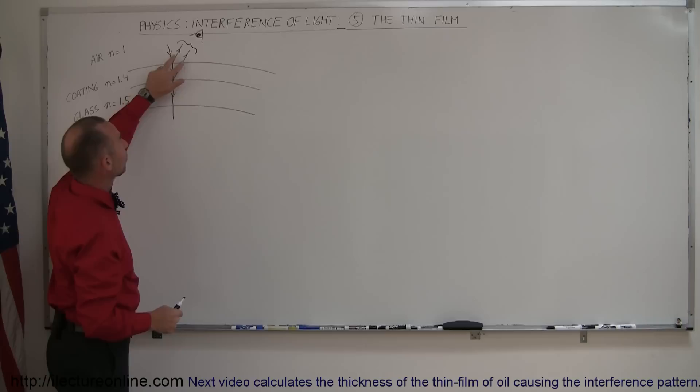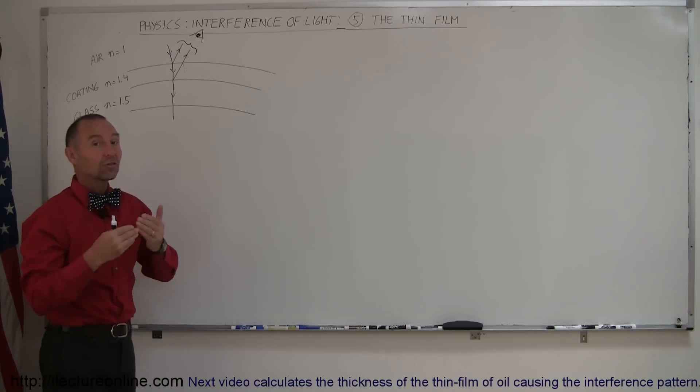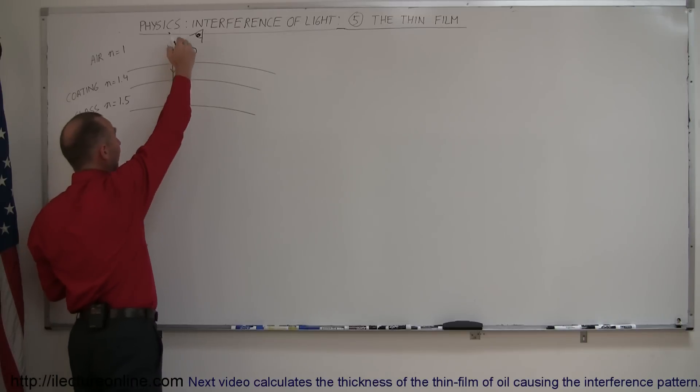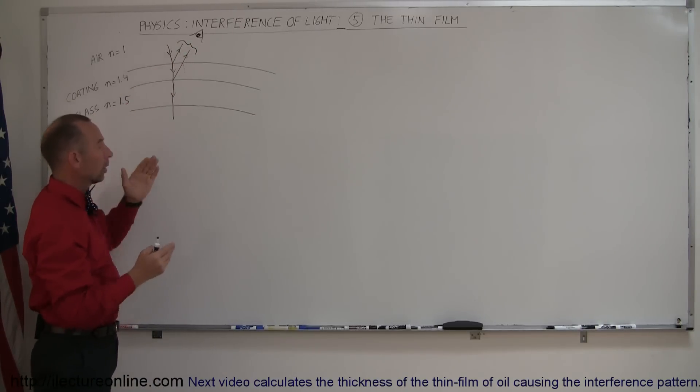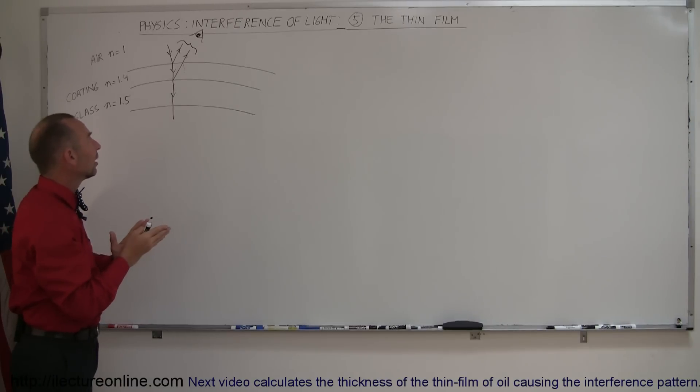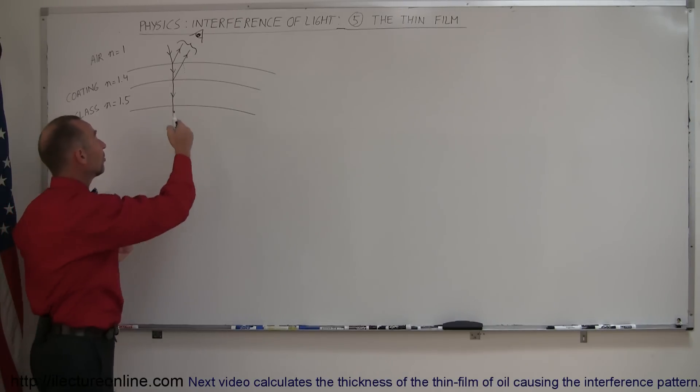In other words, if those two beams are in phase, then you'll see constructive interference and you'll see some bright light coming back. If the two beams of light are out of phase, then they will destructively interfere and essentially you could see nothing at all.